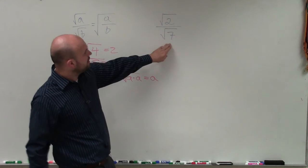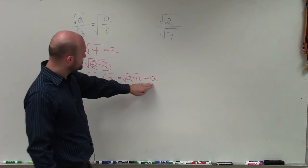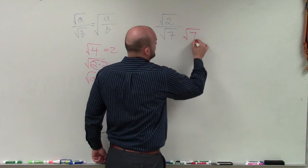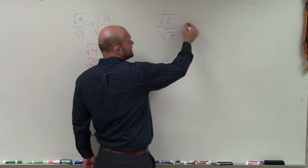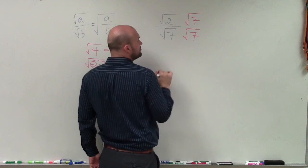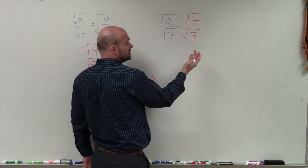So the number that I'm going to want to multiply by the square root of 7 to get it just to be 7 would be the square root of 7. And whatever I do in my denominator, I have to do in my numerator to produce an equivalent fraction.